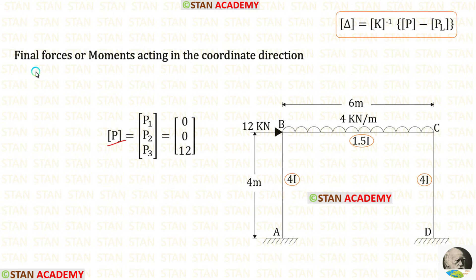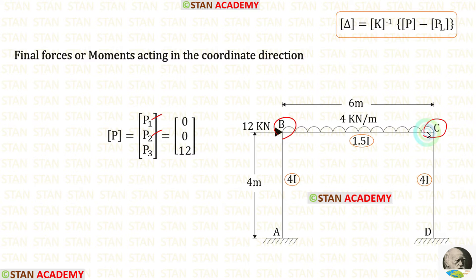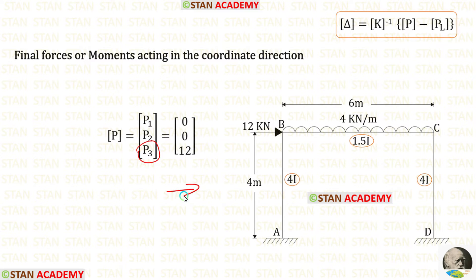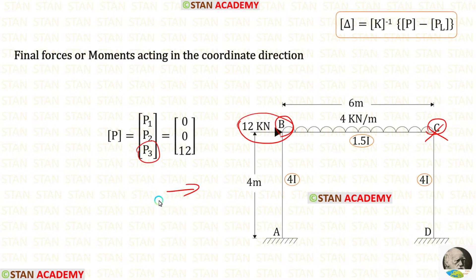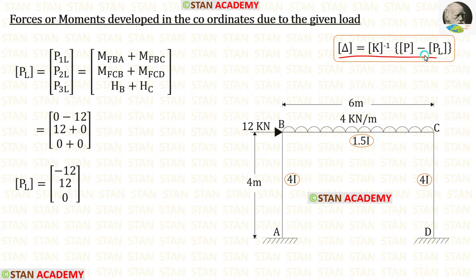Inside the P matrix we will have the final forces or moments acting in the coordinate directions. To find P1 and P2 we check points B and C — there are no external moments at B and C, so P1 and P2 are zero. To find P3 we check for horizontal loads: at point C there is no horizontal load, but at point B we have a horizontal load of 12 kN acting towards the right side, in the coordinate direction, so P3 = +12.